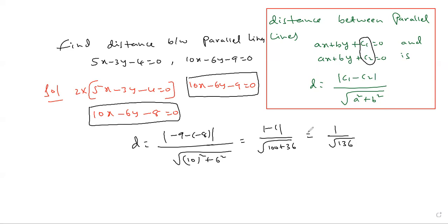The distance between the lines is 1 by root 136. Parallel lines differ by a constant; x and y coefficients are the same. You just convert into exact parallel line form where x and y should be the same and constants differ between the two equations.